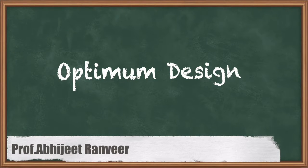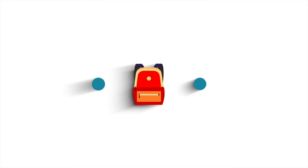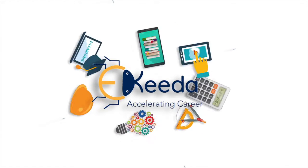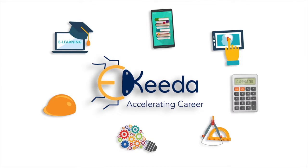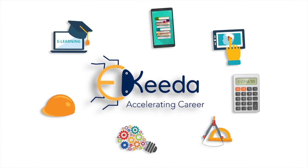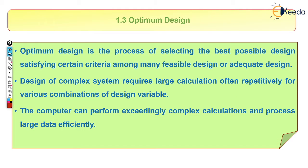In this video we are going to study about optimum design. This is part of the first module on methodology and morphology. The word 'optimum' means we have to find a particular solution — if we have multiple options, we have to choose the best one. That is called optimum.